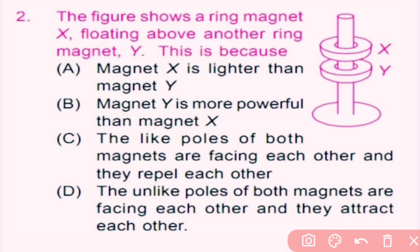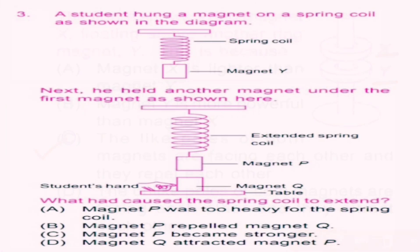Option D, the unlike poles of both magnets are facing each other and they attract each other. Here, magnet X is floating above magnet Y, means their like poles are facing each other, so they are repelling. So here, C is the correct answer.